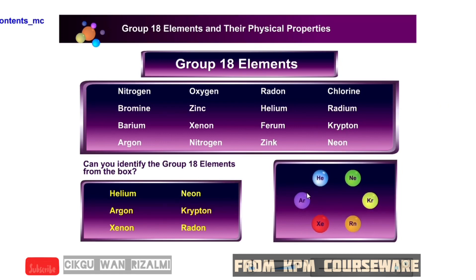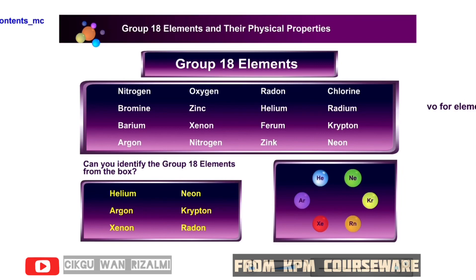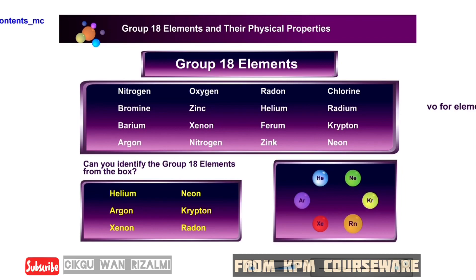Krypton, neon. Now you have finished identifying the group 18 elements. This group of gases is very unreactive — they are chemically inert. Let's have a look at their general physical properties. Click on the blinking button to see the physical properties.